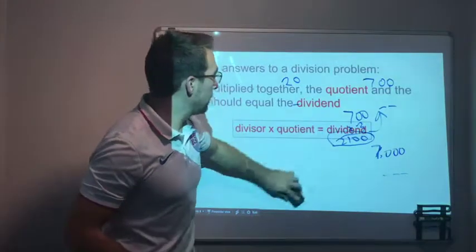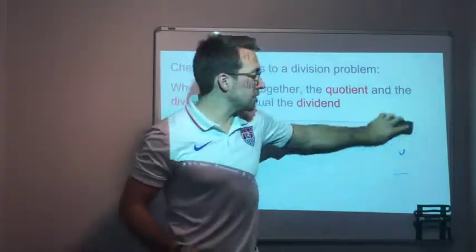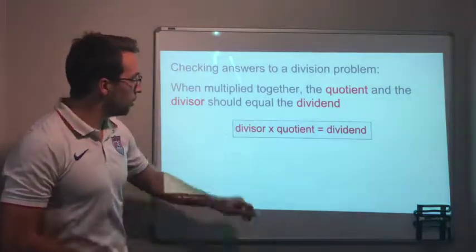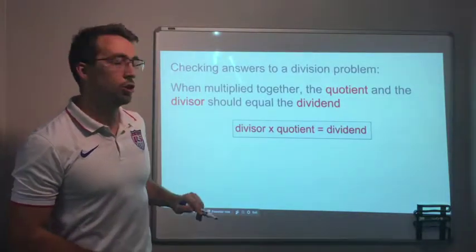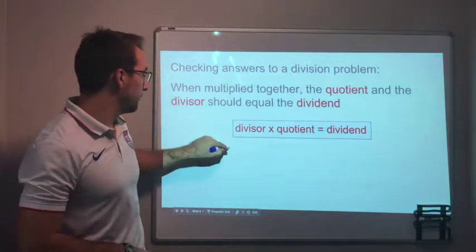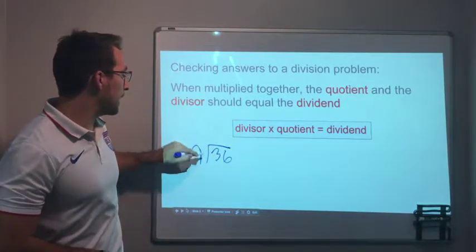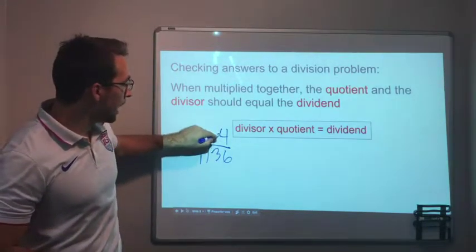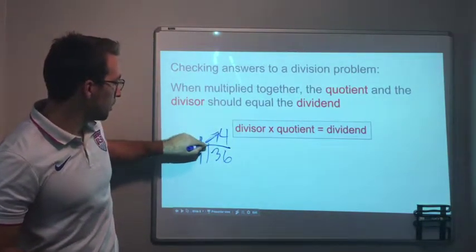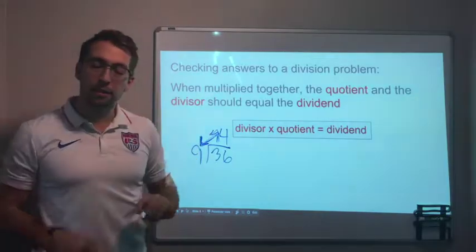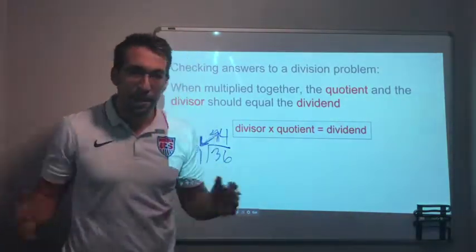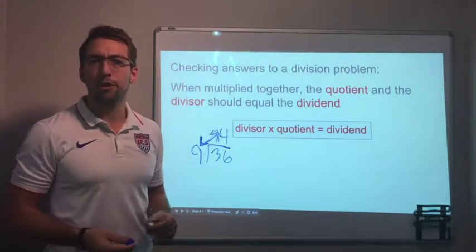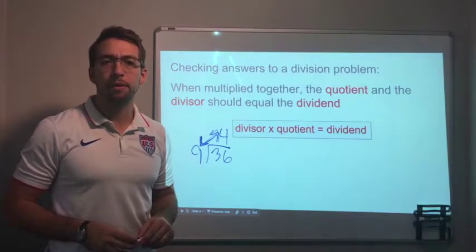When solving a division problem, we always want to check our answer. Go back at the end and do the multiplication — your divisor times your quotient equals the dividend. For example, 36 divided by 9 is 4, and your divisor and quotient will always multiply to give you the dividend. Thanks so much for watching — let me know what other videos I can make for you!